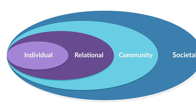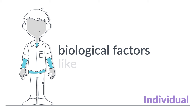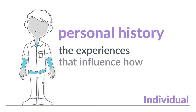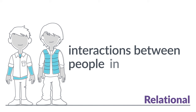The individual level includes personal characteristics and biological factors like age and sex. This level also includes personal history — the experiences that influence how a person thinks and acts. The relational level includes interactions between people in close relationships, like family members and care providers.